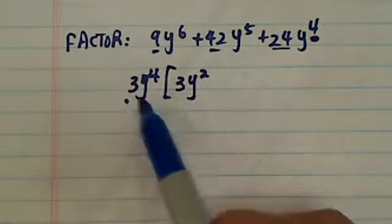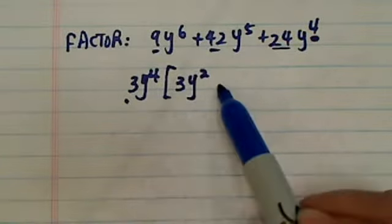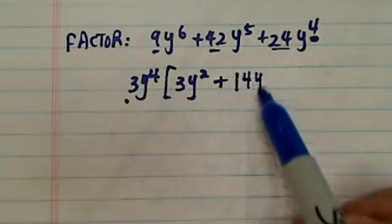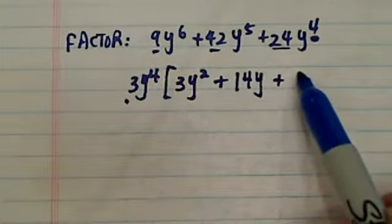Because when you multiply this out, you should have 9y to the sixth. Next one you have 14y, plus 8 left.